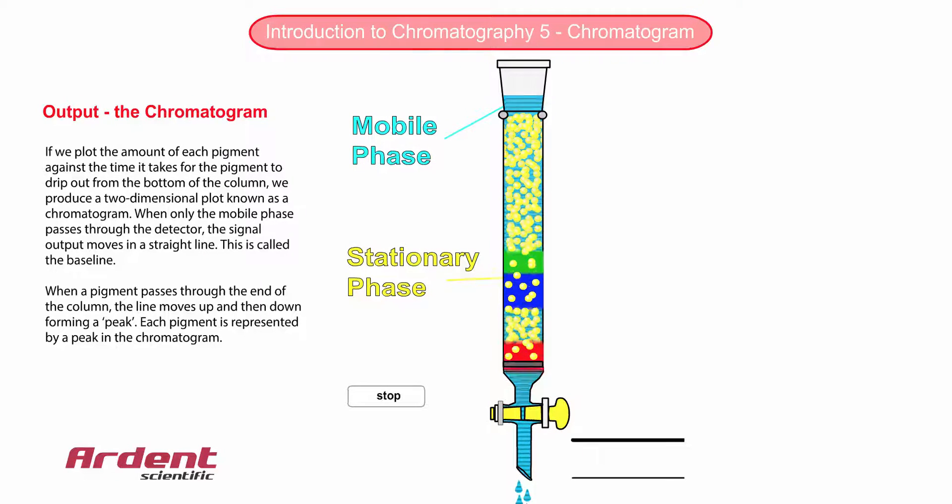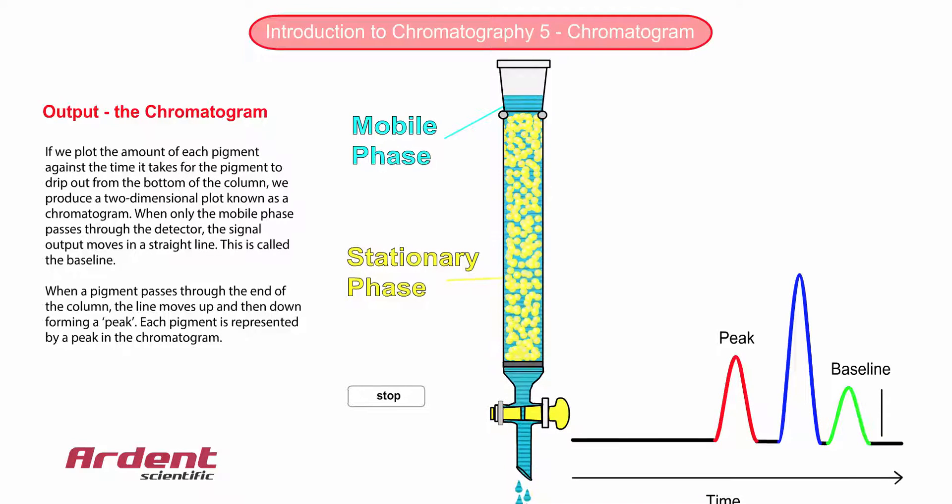We can clearly see the colored bands moving through the column and then finally dripping out of the bottom of the column. But how can we represent the separation in a graphical way?